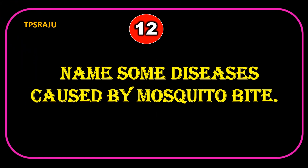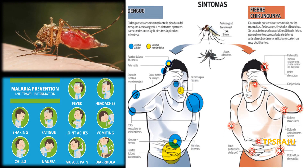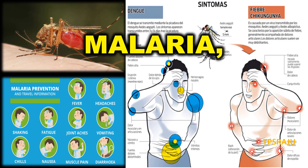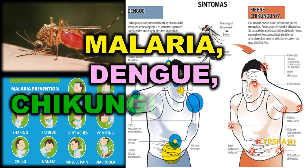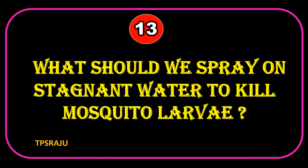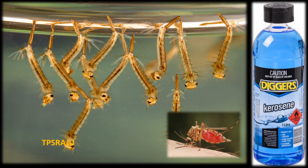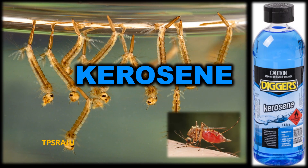Name some diseases caused by mosquito bite. Malaria, dengue, chikungunya, etc. What should we spray on stagnant water to kill mosquito larvae? Kerosene.